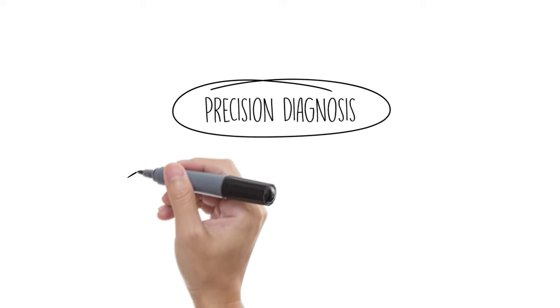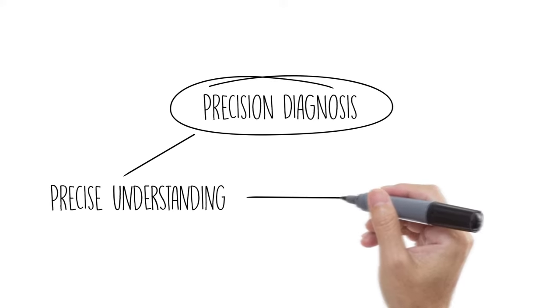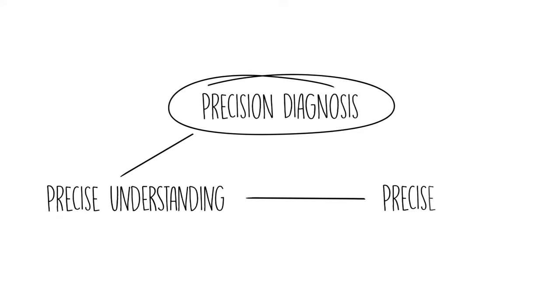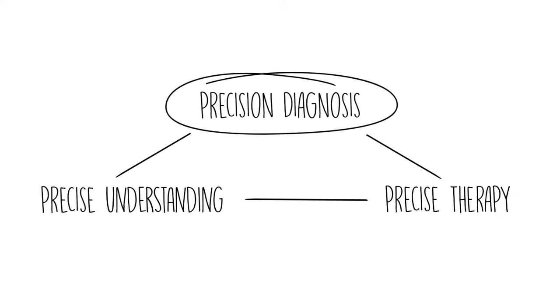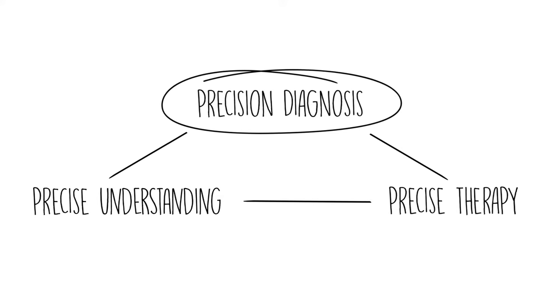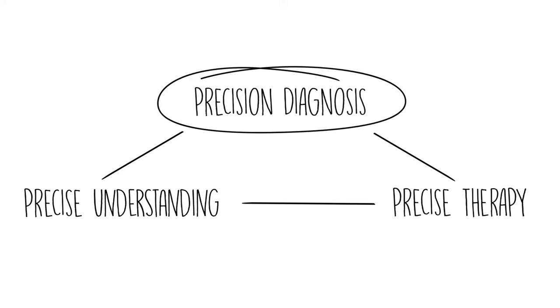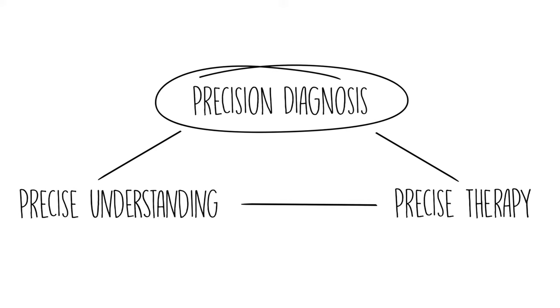The promise of precision medicine is the ability to precisely diagnose an individual. Ideally, we will understand exactly what biochemical or physiological process caused the issue, and with this knowledge we will be able to precisely match a therapy that we know will work.